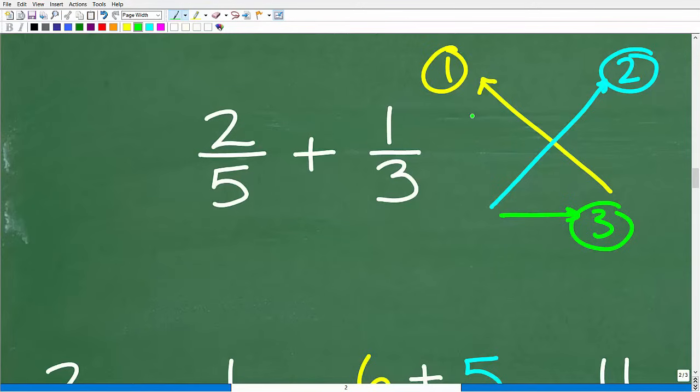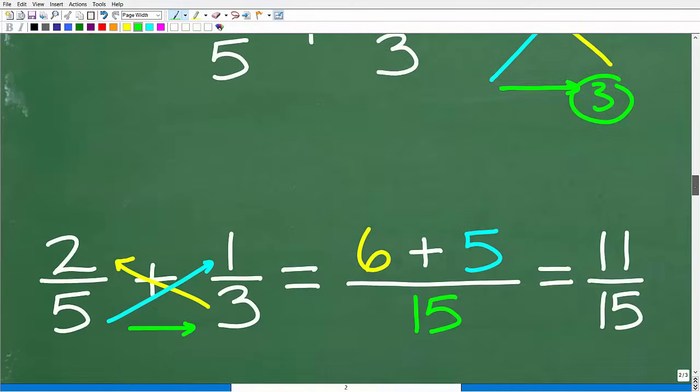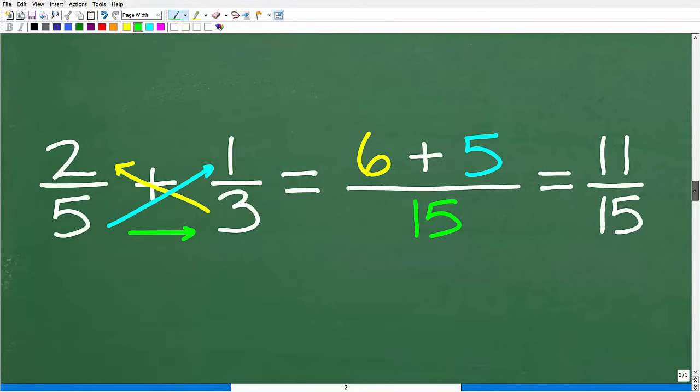So step 1 is this way, step 2 is this way, and step 3 is in this direction, okay? So just remember this way, 1, or remember this pattern, and you will have this technique down. 1, 2, 3. Okay, so let's go ahead and apply the bow tie technique right now.